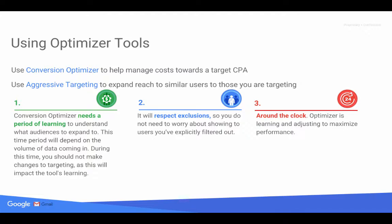You could also optimize automatically using conversion optimizer, which helps you manage costs towards a target CPA and uses aggressive targeting to expand reach to users similar to those you are already targeting. Keep in mind that conversion optimizer needs a learning period to determine which audiences to expand to — this depends on the volume of data coming in. We recommend you don't make changes to targeting during this period, as it could impact the tool's learning. It will also respect exclusions, so you don't need to worry about showing ads to users you have explicitly filtered out. Targeting tools work around the clock, optimizing and adjusting to maximize performance at all times.